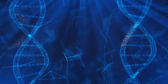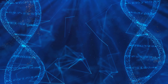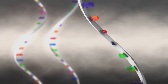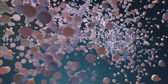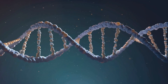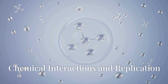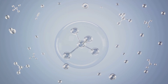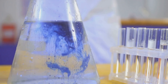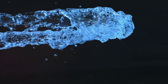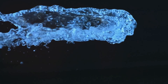The RNA molecule floated in a nutrient-rich pool near a hydrothermal vent, a place where the Earth's crust opened up and released superheated, mineral-laden water into the ocean. This environment was a cauldron of chemical activity where simple molecules combined and recombined under intense heat and pressure. The RNA molecule, composed of a sequence of nucleotides, was a product of countless such reactions. Each nucleotide — a combination of a sugar, a phosphate group, and a nitrogenous base — had been synthesised from the simpler molecules present in the primordial soup.